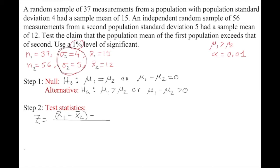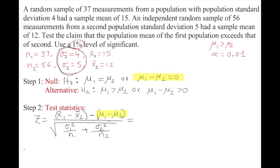The standard error is the square root of (σ₁² / n₁ + σ₂² / n₂). Since under H₀ the difference of population means equals 0, that term drops out, simplifying the formula. Let's substitute the values.